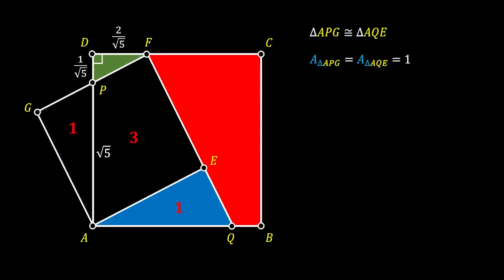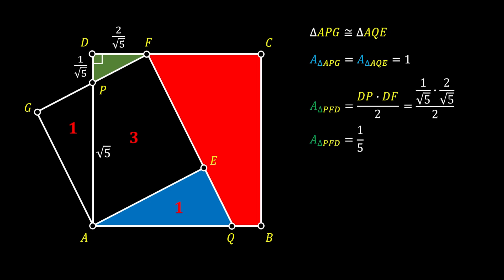Now we will find the area of our smaller green triangle PFD. Its area is equal to the product of its legs over two. We can substitute our values and after simplification we will get that the area of this small triangle is equal to one over five squared units.